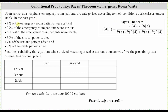In the past year, 4% of the emergency room patients were critical, 29% of the emergency room patients were serious, and the rest of the emergency room patients were stable. 30% of the critical patients died, 7% of the serious patients died, and 3% of the stable patients died.